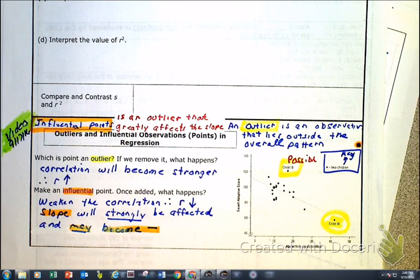So, we are talking about on this video outliers and influential points and how it affects our residual line, how it affects our correlation coefficient, how it affects our equation of a line. Let's do it.